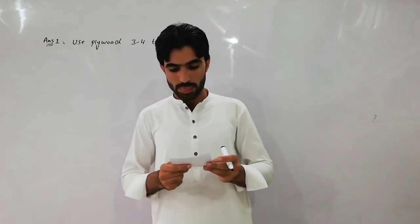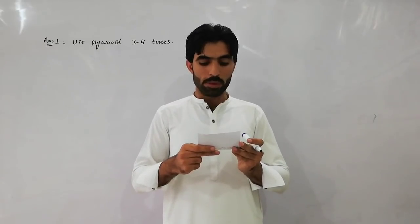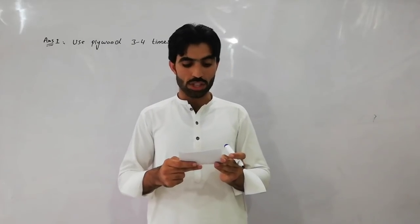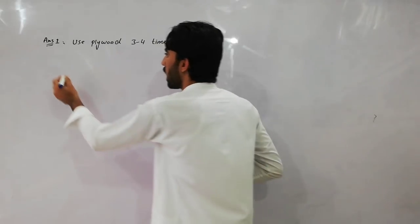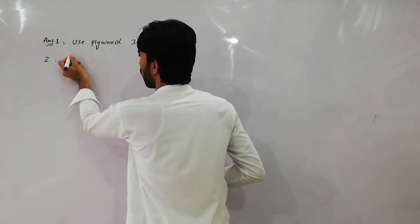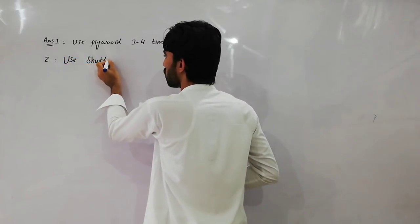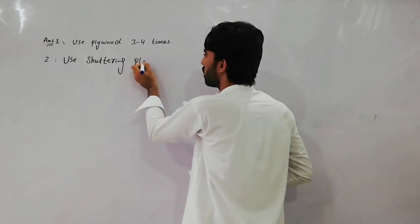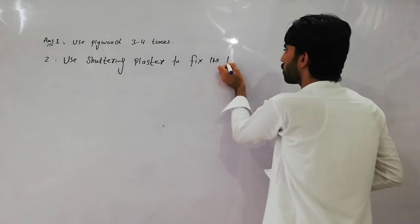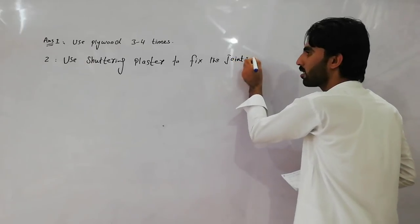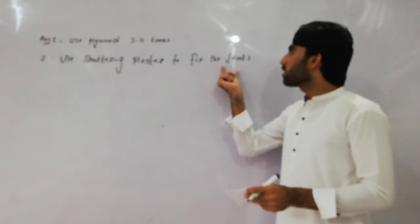The second question is: what should we do if the formwork becomes leaky? The answer is: use sealant plaster tape to fix the joints, and it will prevent any leakage in the concrete.